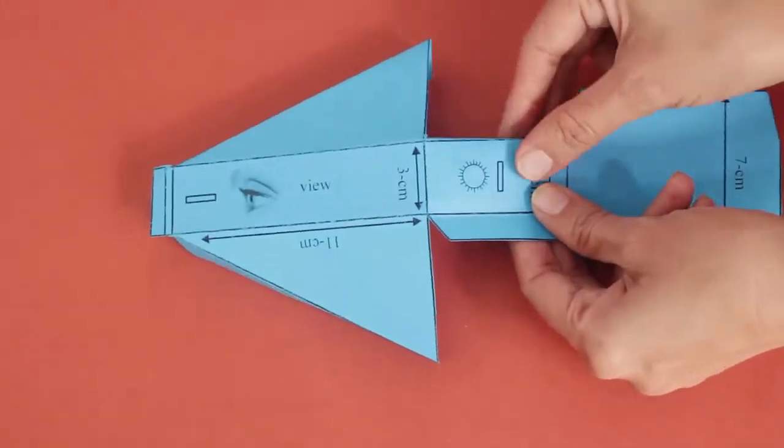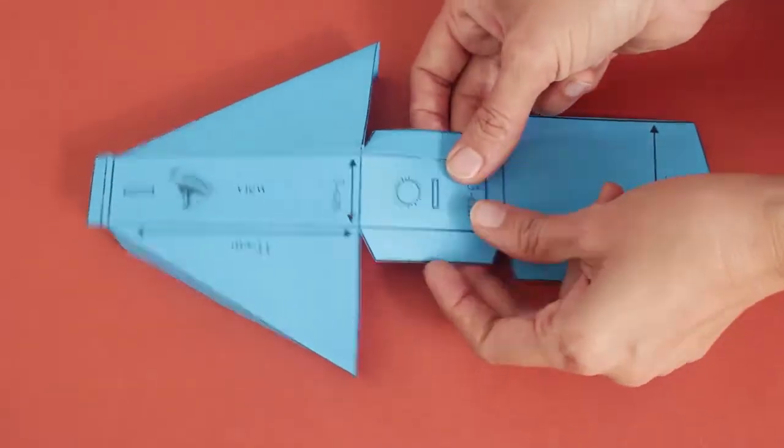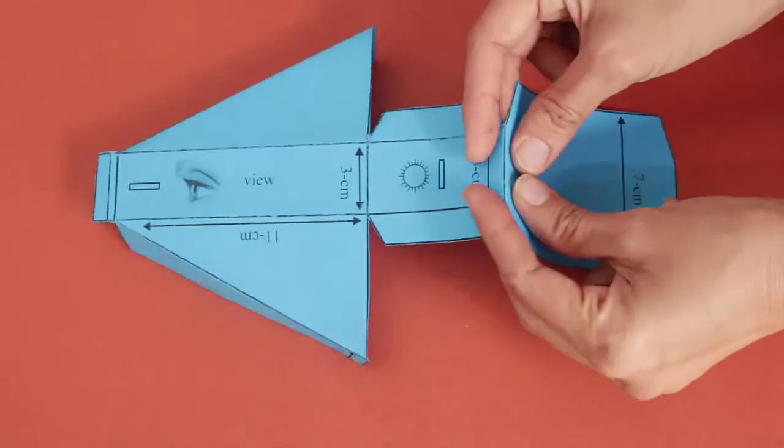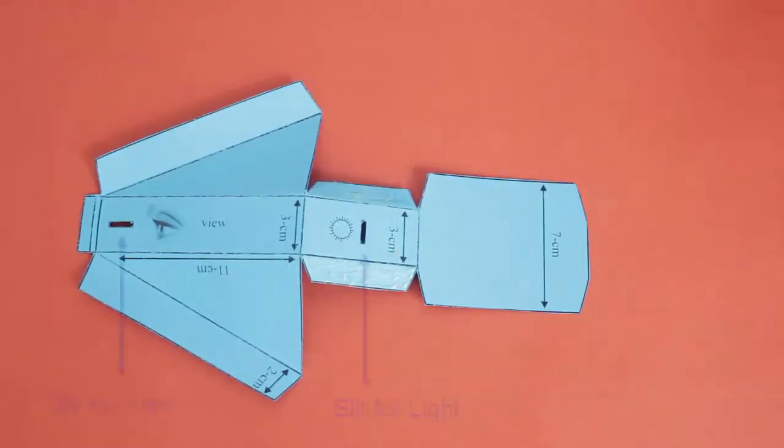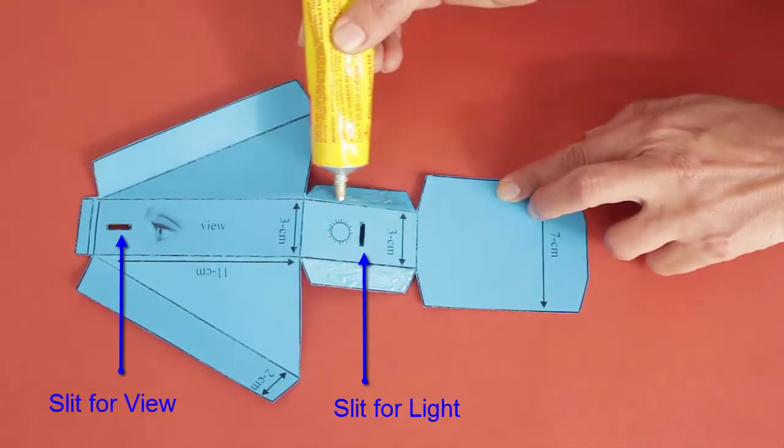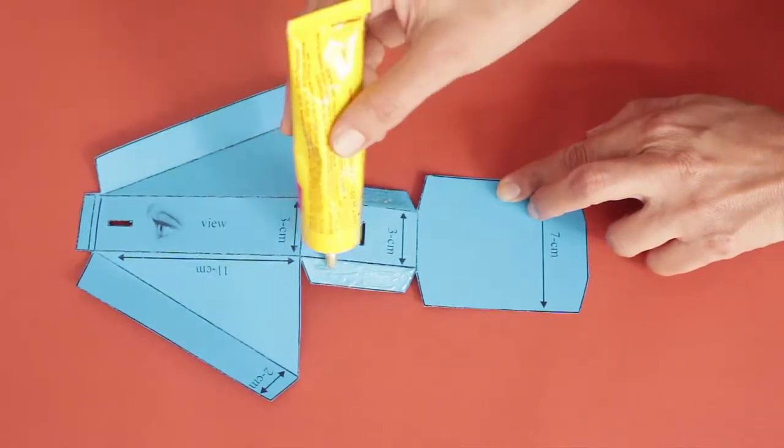Cut two rectangular slits. One for the sunlight to enter and the other one is to place your eye to view the spectrum.